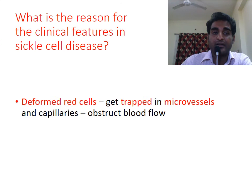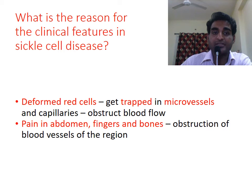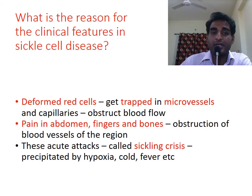The clinical features occur because the deformed and distorted red cells fail to navigate through small blood vessels and get trapped. This in turn occludes the blood vessel, blocking the circulation. The clinical manifestations are pain in the abdomen, fingers, and bones due to involvement of blood vessels in the respective areas. The acute attacks are called sickling crises and are precipitated by conditions that lead to hypoxia.